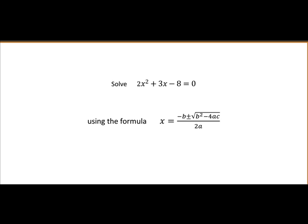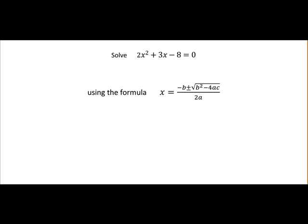Here we are asked to solve the quadratic 2x squared plus 3x minus 8 equal to 0 using the formula. So our first job here is to identify what a, b and c are.